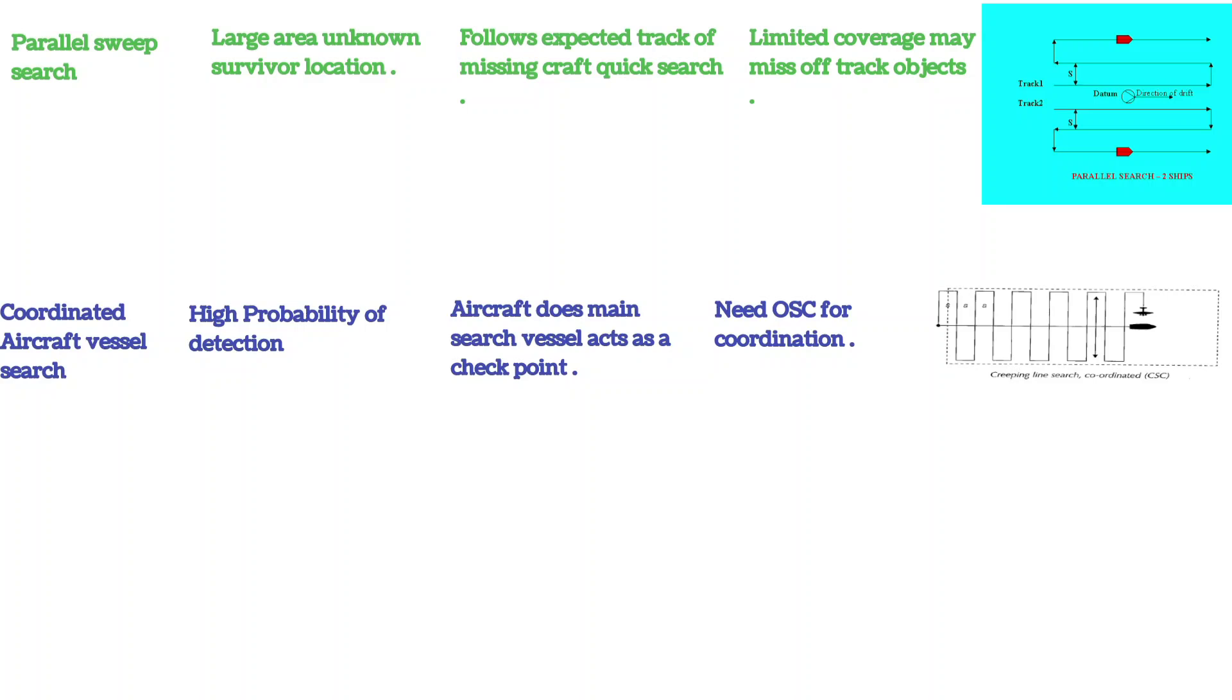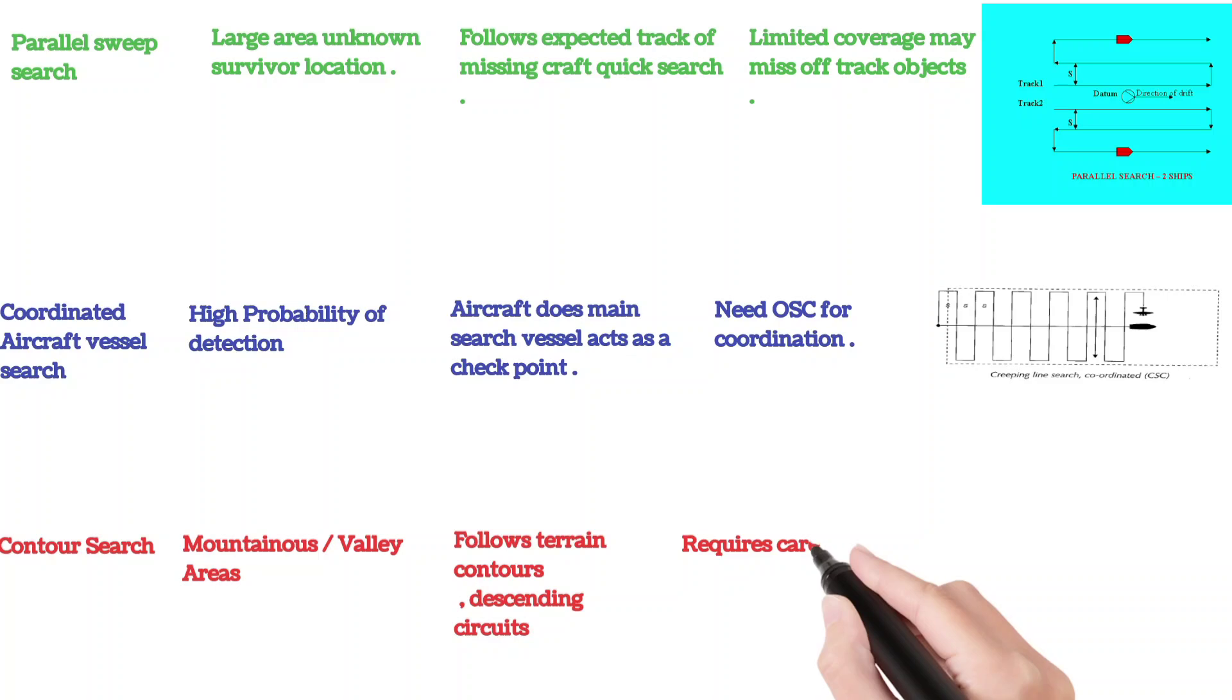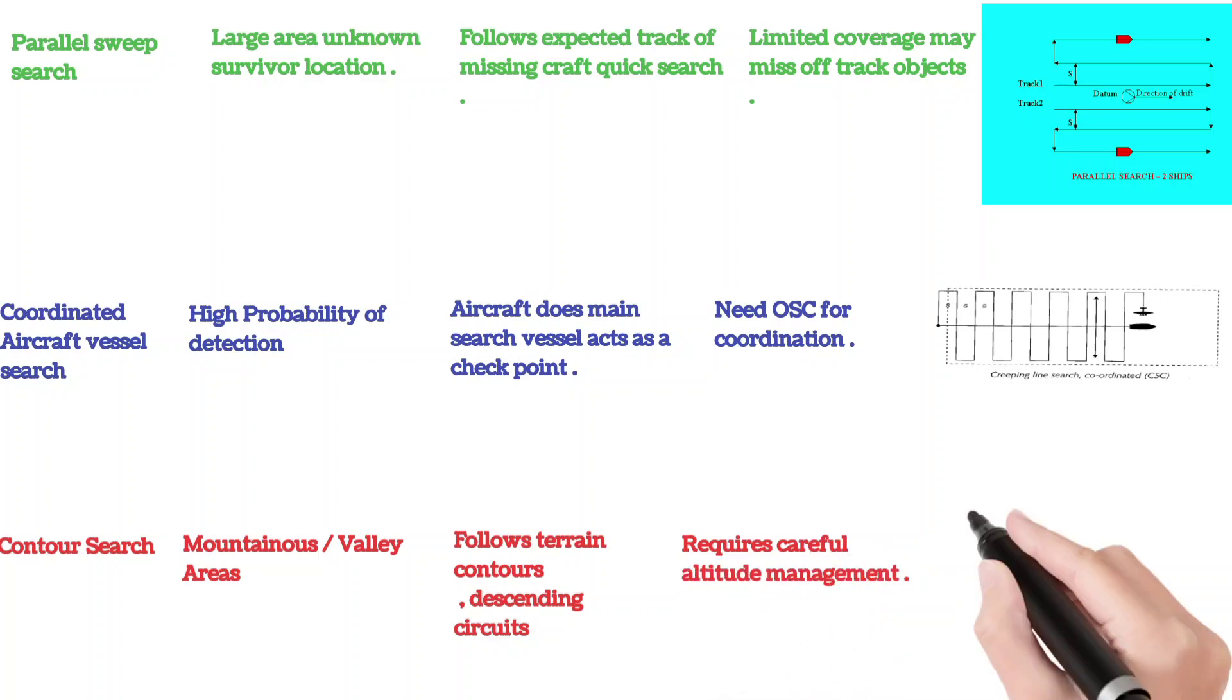It needs on-scene coordinator for coordination. Then we have contour search. It is for mountainous and valley areas, follows terrain contour descending. Circuit requires careful altitude management as shown in the figure.